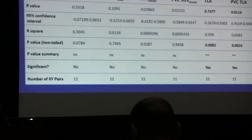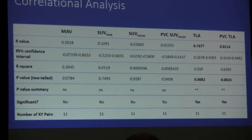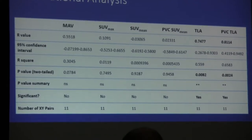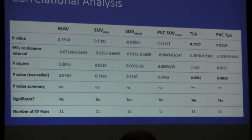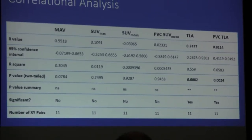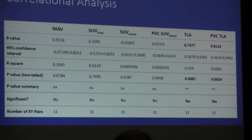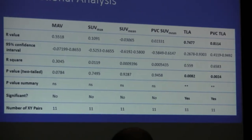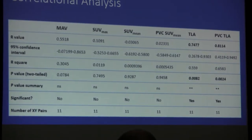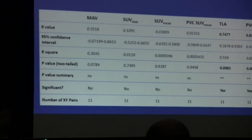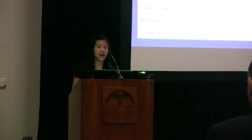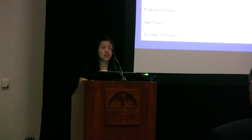Correlational analysis was done by GraphPad Prism, and we see that not all six quantification values from Grover had a correlation with arthritis severity — specifically SUV max, SUV mean, and PVC SUV mean did not. However, TLA and PBC TLA were found to be very significant, with p-values of .0082 and .0024 respectively, and r-squared values of .559 and .6583 respectively. MAV was found to be almost significant with a p-value of .0784 and an r-squared value of .3045, and we believe that with a larger sample size this correlation may have been strengthened.